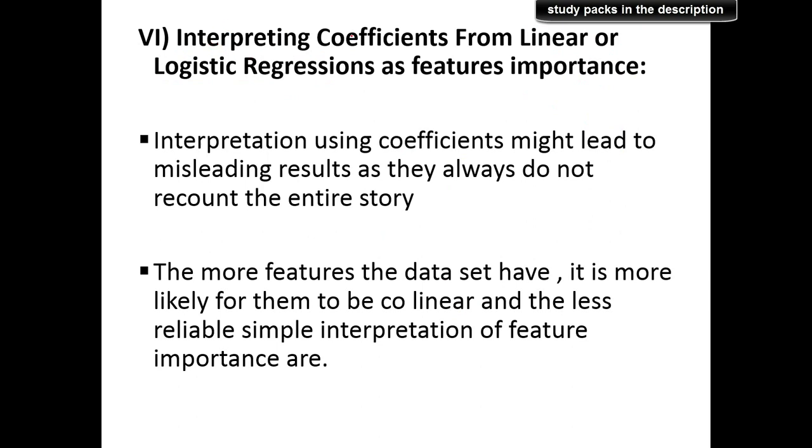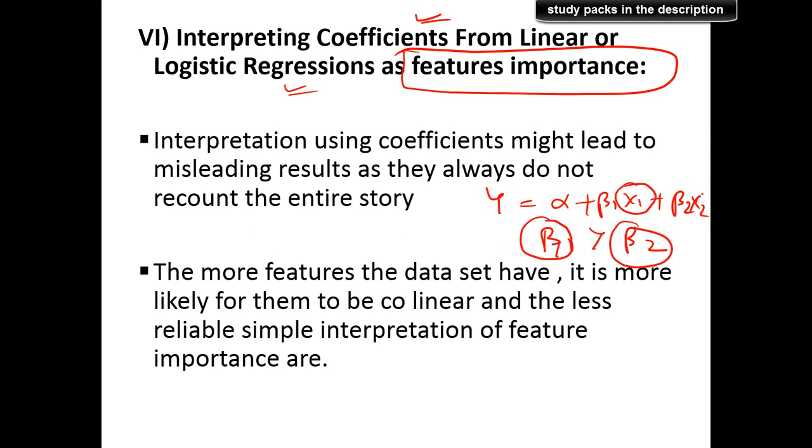Many people start interpreting coefficients from linear and logistic regression as features importance. So first thing is, when you build a model, let's say you build a model like this and you get beta 1 and beta 2. For instance, beta 1 is greater than beta 2. Some people interpret this like this: they think that since beta 1 is greater than beta 2, so x1 is more important for the model than x2. That's the way they interpret, but that's wrong. You cannot do that. Only when your x1 and x2 are standardized, you can do that. Otherwise, you cannot. So ensure that you standardize your data before you compare different features.